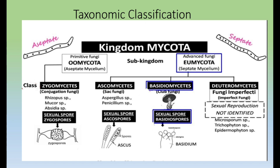Ascomycetes are known as sac fungi because their spores are enclosed in a sac-like structure known as an ascus. The notable species in this class are Aspergillus species and Penicillium species.